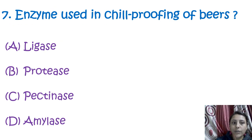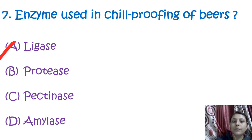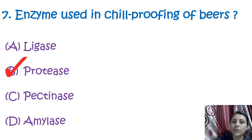The next question is: which enzyme is used in chill proofing of beer? The answer is protease enzyme. Protease enzyme is used in chill proofing of beer.